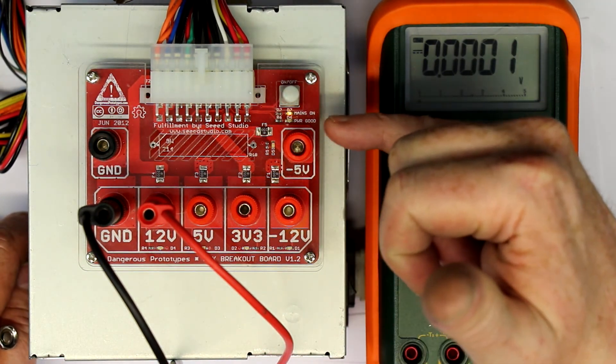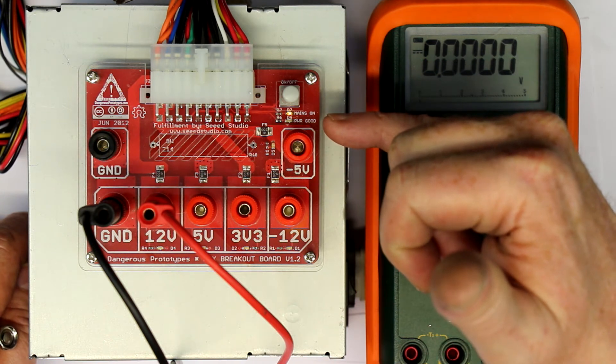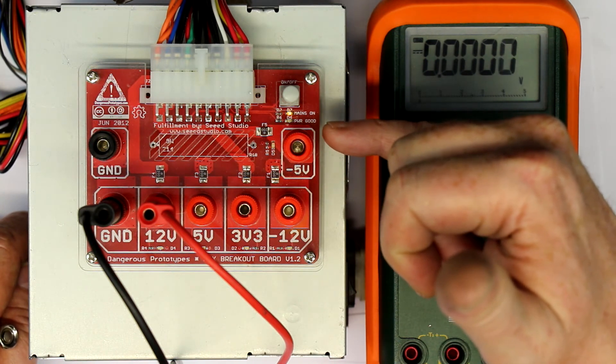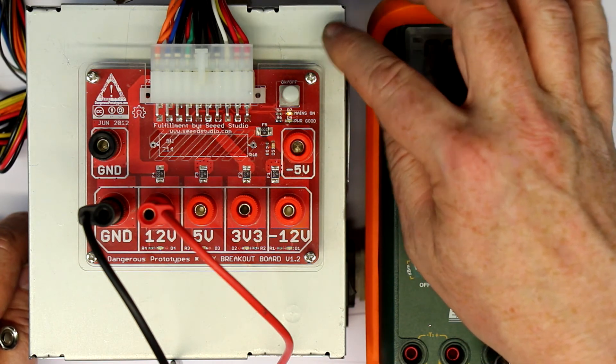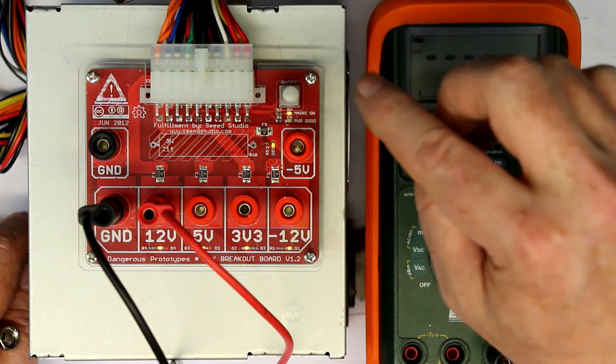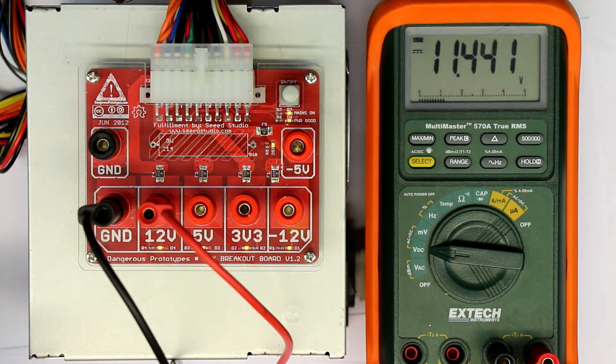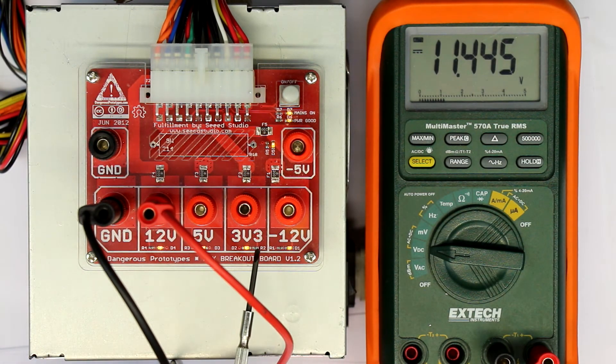You can see here there are some little orange LEDs. The first one is if there is power here on the ATX power supply. Now if you push the power button, all the other lights, all the other LEDs go on where power is present.